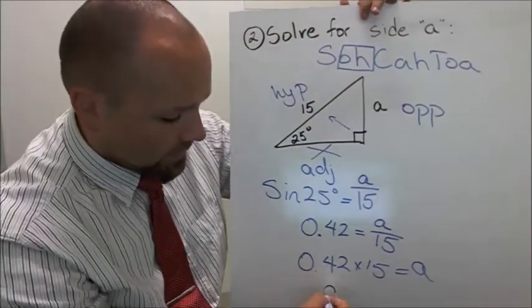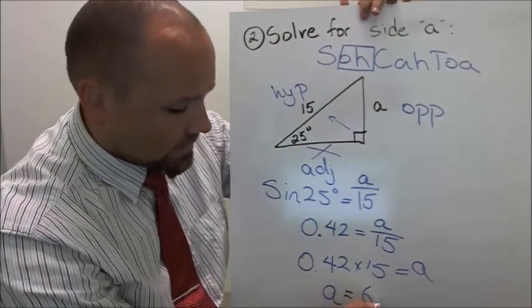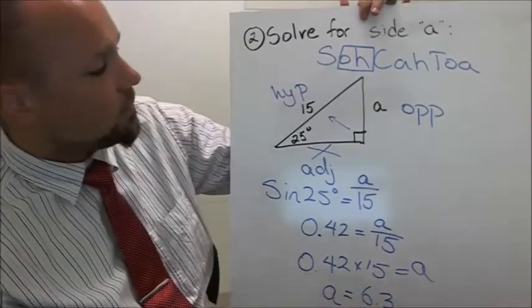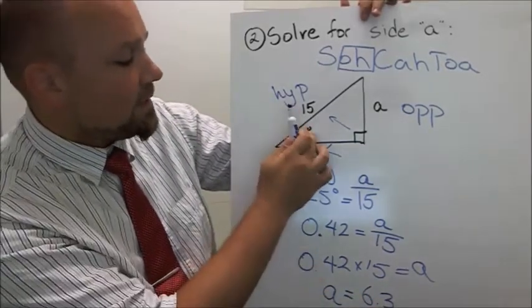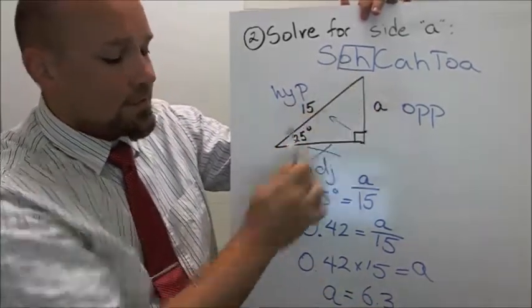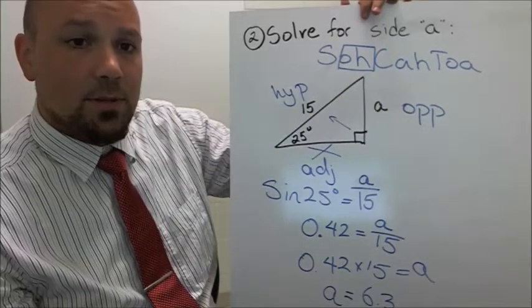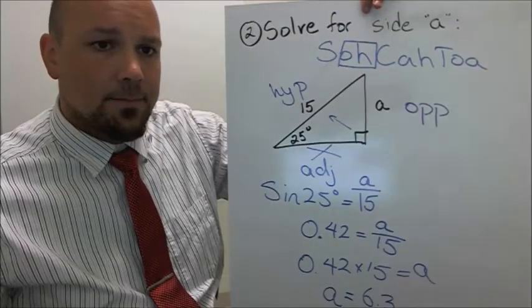So that means the length of side A is 6.3 units. So if that's 15 and that's 25 degrees, I know that this side has to be 6.3. So that's it. See you next time.